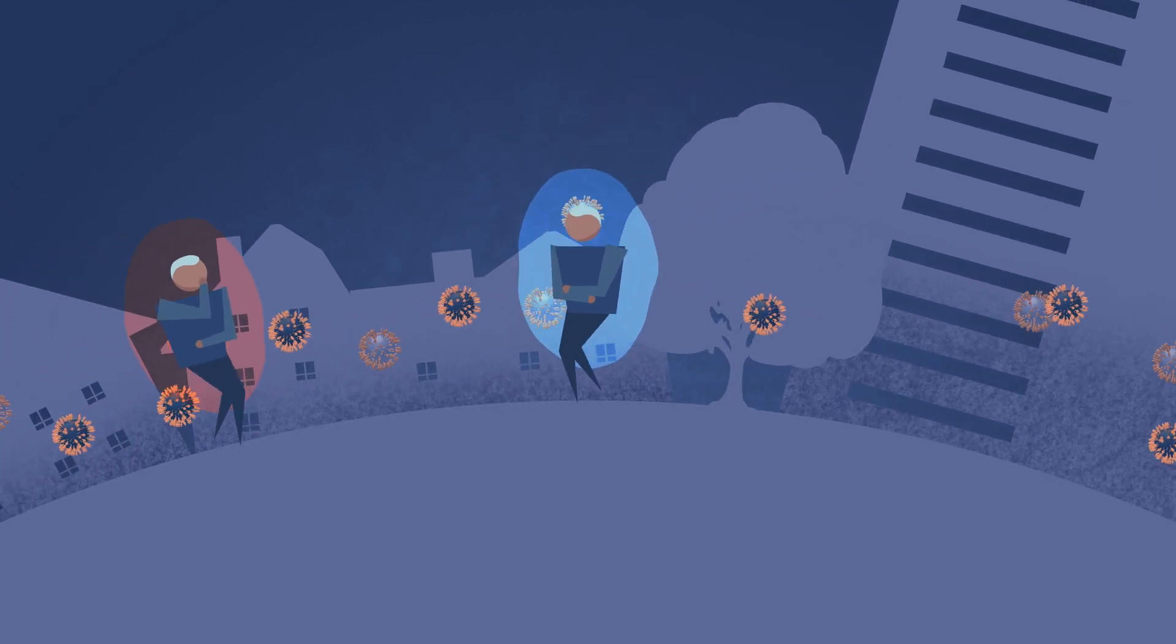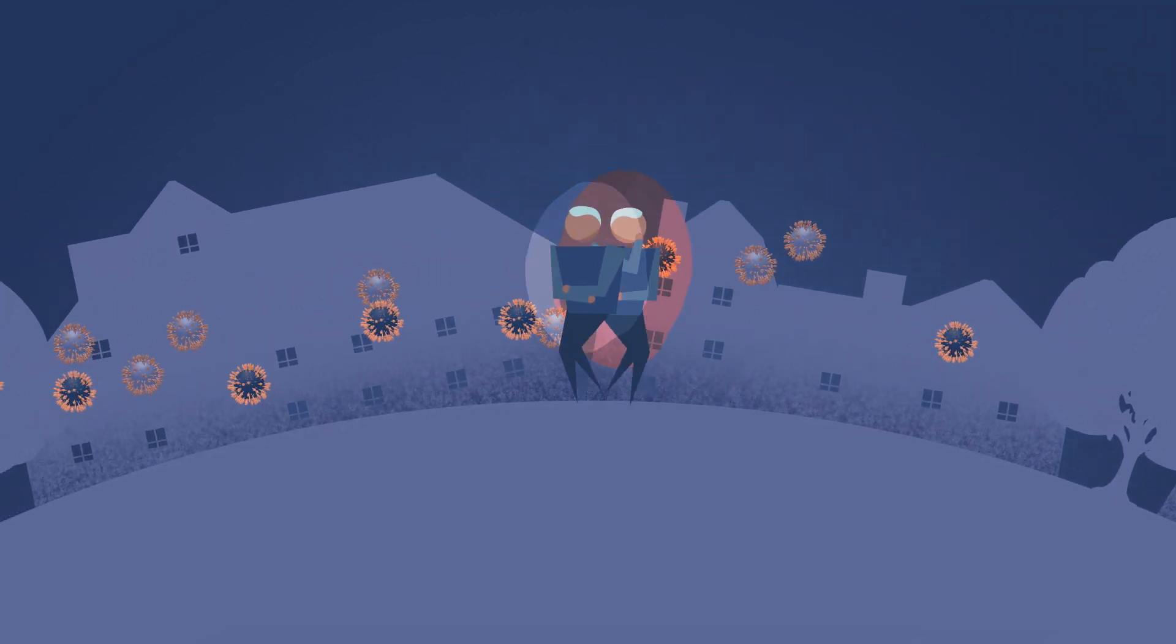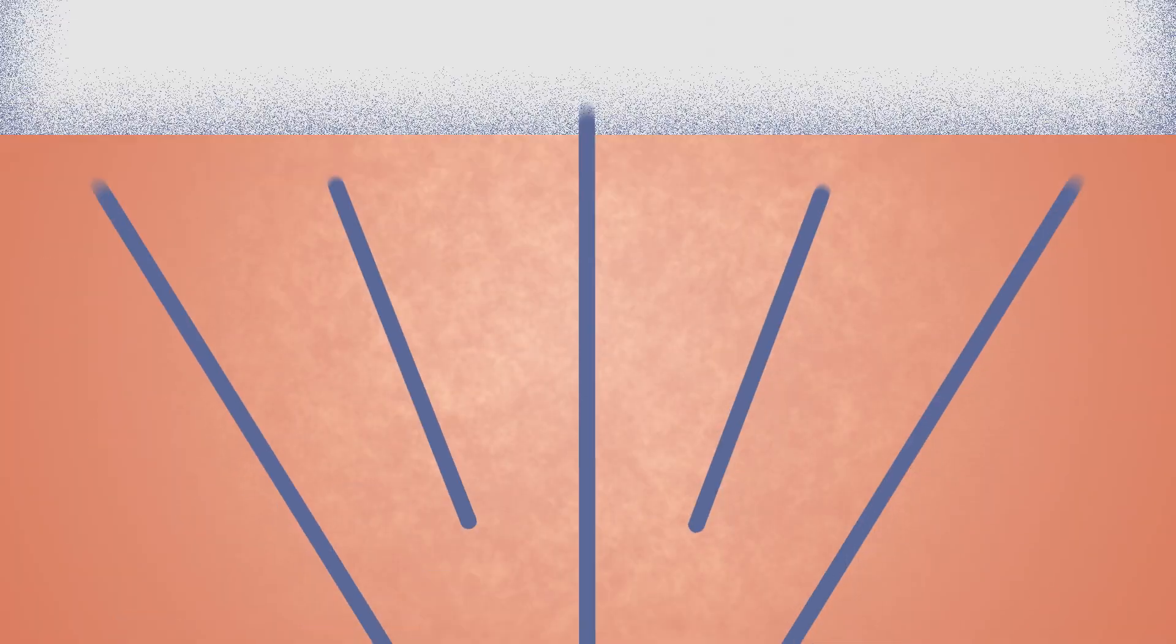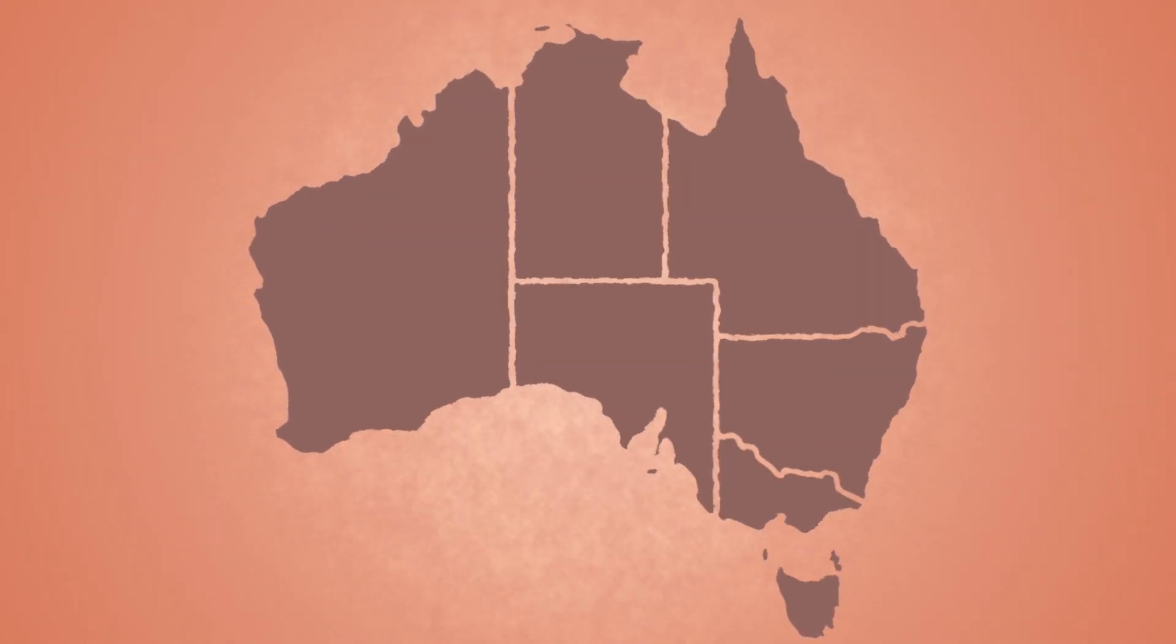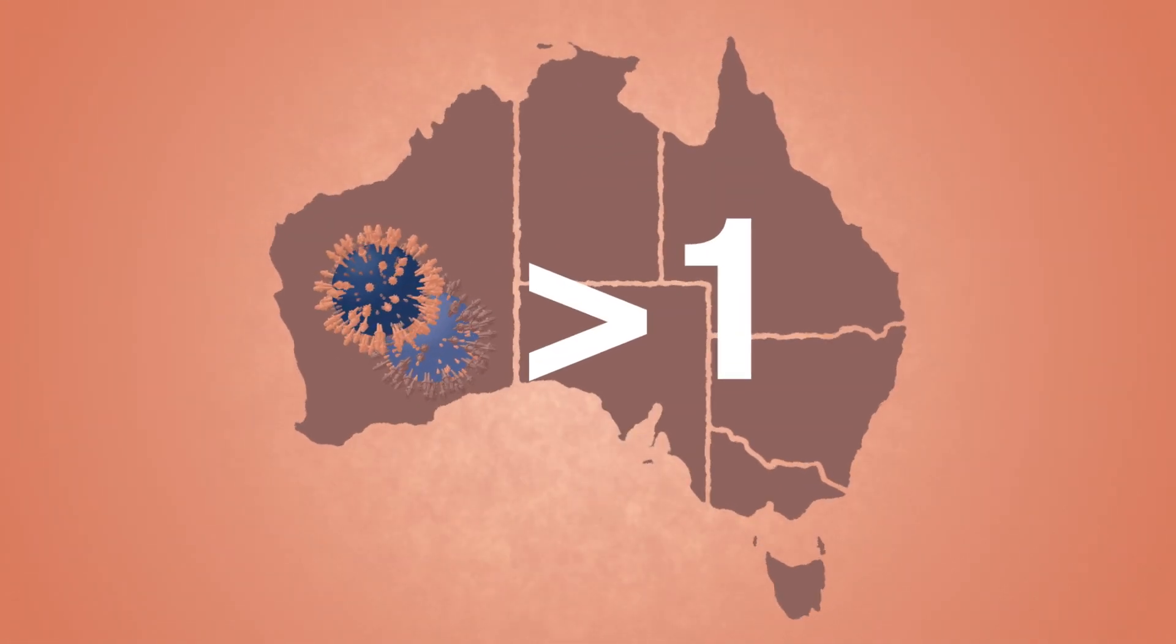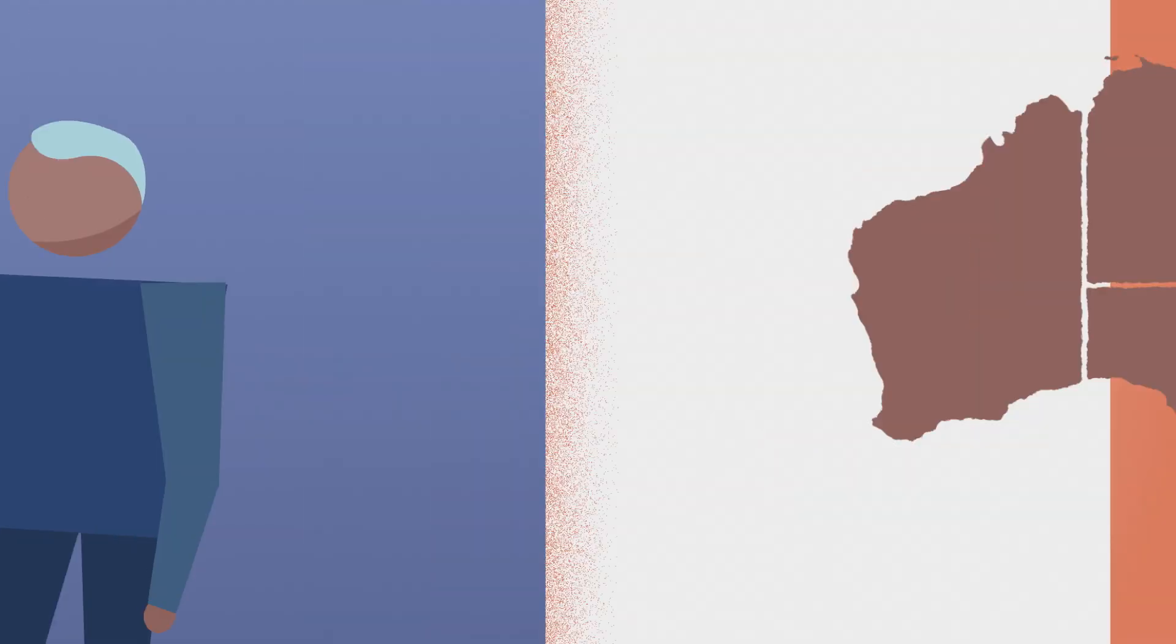Experts say they appear to be masters at evading immunity, which increases the chance of reinfection. All Australian states and territories are now seeing a reproduction number greater than one, meaning we're seeing growth in case numbers.